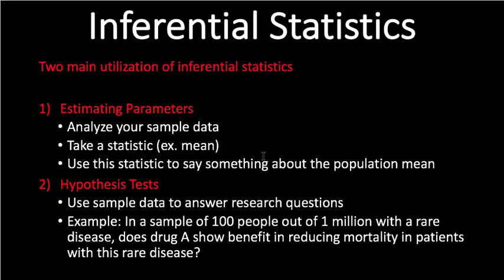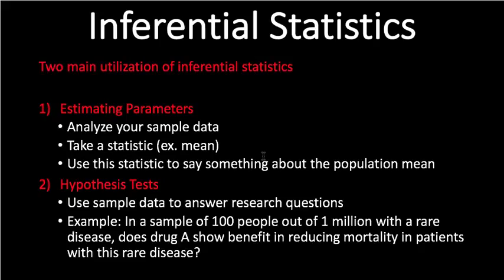There are two main uses of inferential statistics. One is to estimate parameters — you analyze data based on your sample size, take a statistic like the mean or standard deviation, and use it to say something about the whole population. For example, based on your sample of birds, how spread out are the lengths of their wings? Are the numbers very different from each other, or are they close?